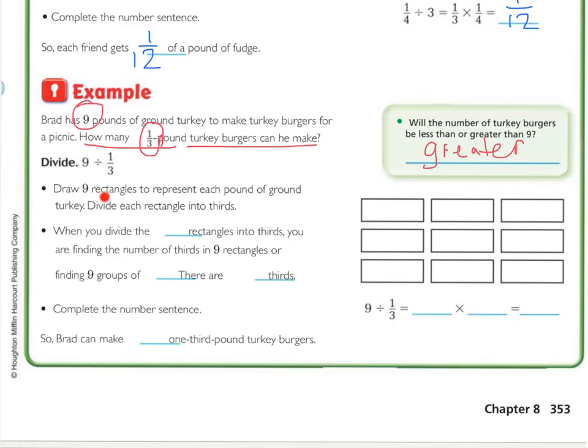So the first step is to draw 9 rectangles to represent each pound of ground turkey. Okay, so there's the 9 rectangles. And then we're going to divide each rectangle into thirds. So press pause and divide each of these into 3 parts, thirds. Okay, so now you should have them divided into thirds. So when you divide the 9 rectangles into thirds, you are finding the number of thirds in 9 rectangles, or essentially we're finding 9 groups of, what do we make? 9 groups of 3. So how many thirds are there?